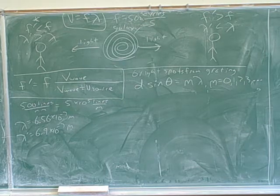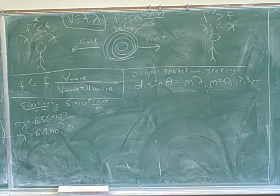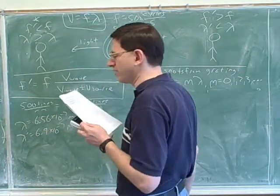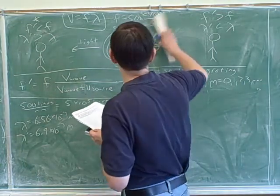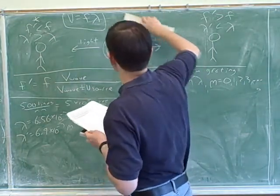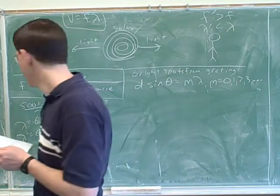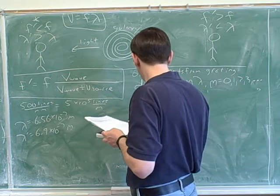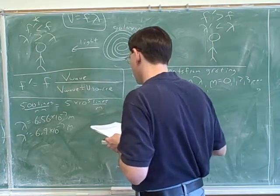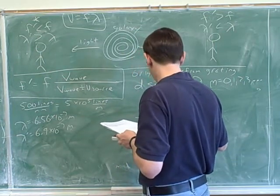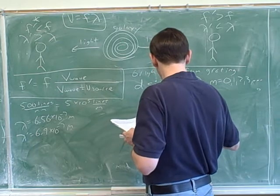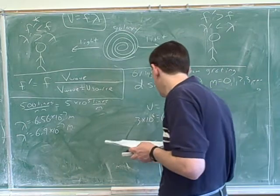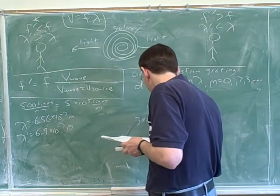Yeah, because this is light that we're observing from this galaxy, right? In the examples I was giving, you know, I was talking about baseballs and sound and stuff. But this problem is about, you can see at the very start of the problem, light from a distant galaxy. Well, we can always assume we know the speed of light. So, you say 3 times 10 to the 8th equals F times 6.56 times 10 to the negative 7. And then 3 times 10 to the 8th equals F prime times 6.9 times 10 to the negative 7. Okay. Good. That's right. That's exactly right. Okay. Good.